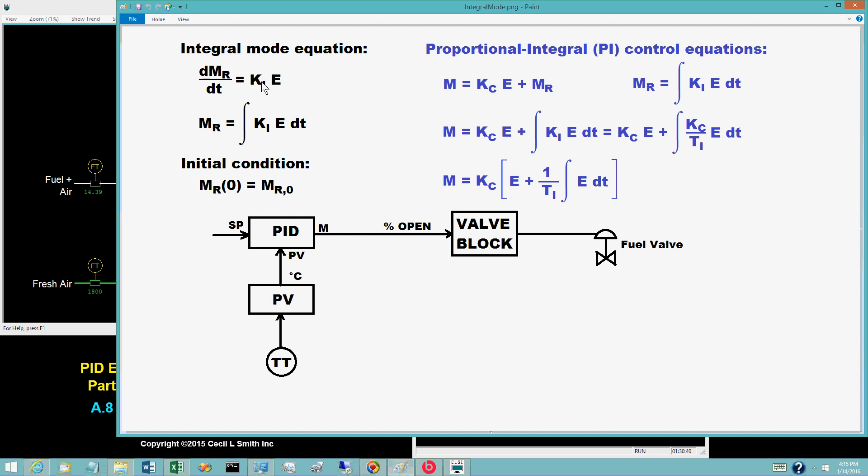Integrating this differential equation gives the more common expression for the integral mode. The control output bias M sub R is the integral of K sub I E dT.